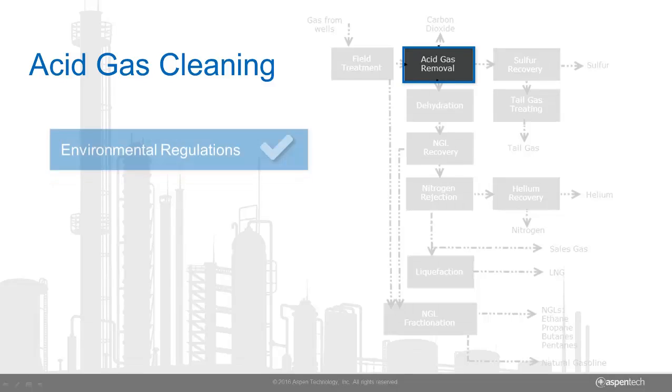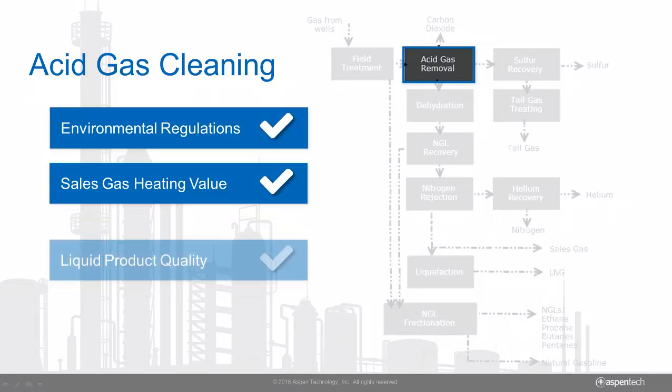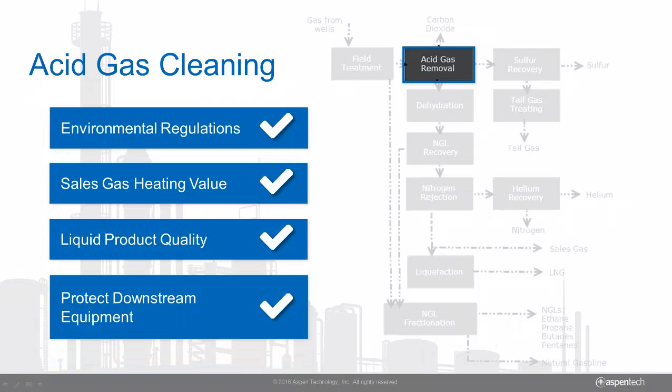Understanding the acid gas cleaning unit and predicting its performance can allow you to push the limits of your plant while also meeting regulations. Removal of these contaminants can prevent damage to downstream equipment.